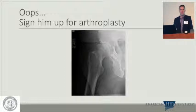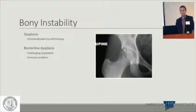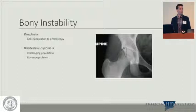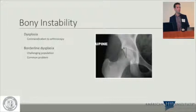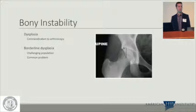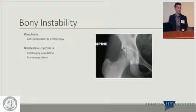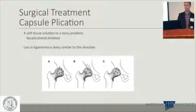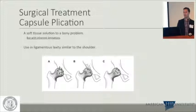There are essentially two types of instability: bony instability with low acetabular coverage, generally defined as a center edge angle of 25 or lower, and ligamentous instability. A soft tissue solution to a bony problem has inherent limitations — you can't do a capsular plication in a patient with severe dysplasia. You have to be aware of how much is too much dysplasia. The capsular plication is essentially an inferior shift of the capsule after capsulotomy, bringing the inferior limb superiorly.